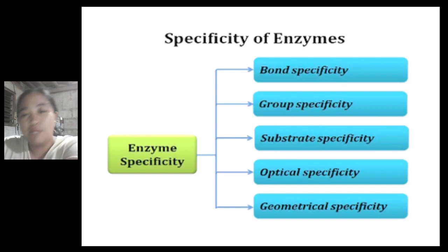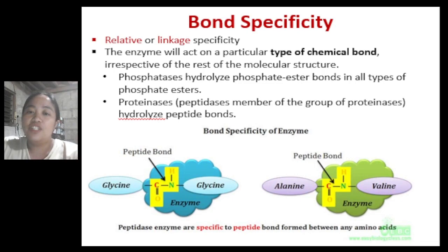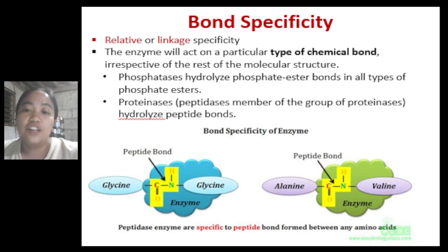There are five types of enzyme specificity: bond, group, substrate or absolute, optical or stereo, and geometrical. Starting with bond specificity, also called relative or linkage specificity, this enzyme will act on a particular type of chemical bond irrespective of the rest of the molecular structure. An example is phosphatases, which hydrolyze phosphate ester bonds in all types of phosphate esters.